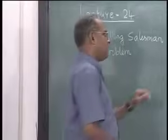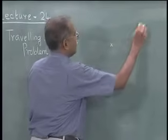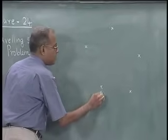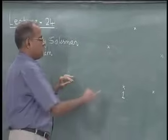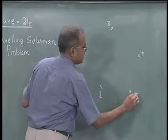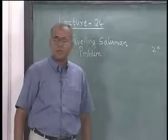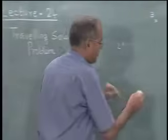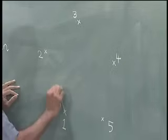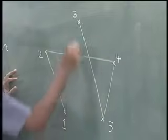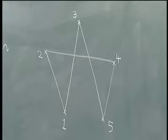What is the traveling salesman problem? Consider a situation where there are five cities or five nodes, and a person who is currently at node 1. This person has to visit each of the remaining nodes once and only once and come back to the starting point. One feasible solution could be: 1 to 2, to 4, to 5, to 3, and back to 1.